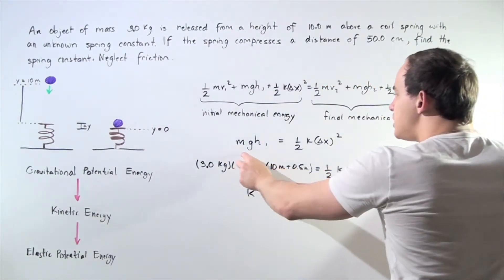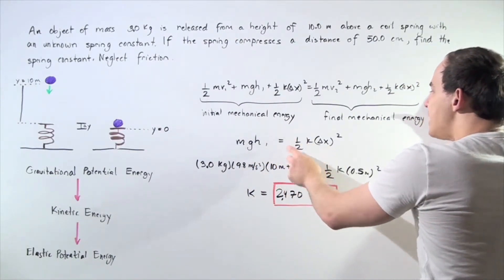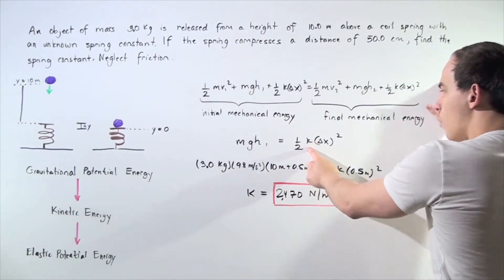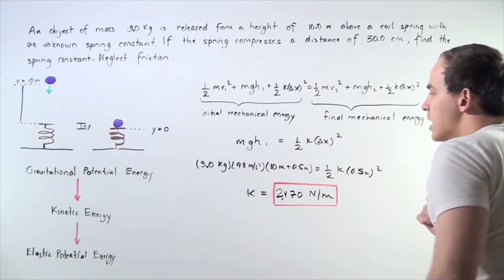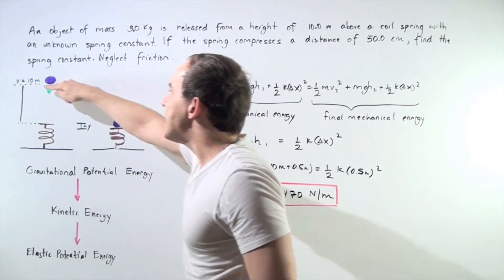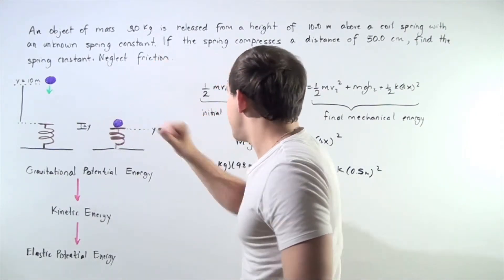We're simply left with mgh1 equals one-half k, what we're looking for, times displacement of the spring squared. So we know what h1 is. It's simply 10 meters plus this displacement,